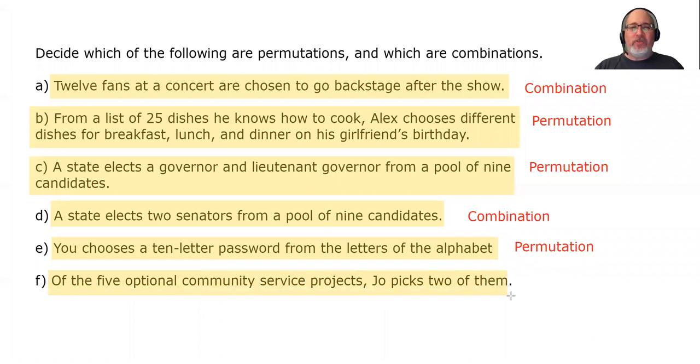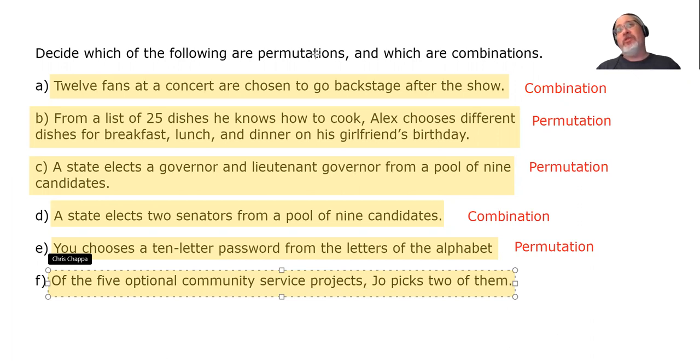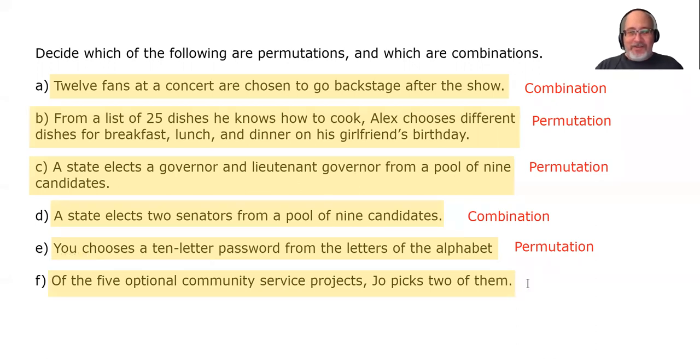Of five optional community service projects, Joe picks two of them. Does it matter what order she picks them in? No. If Joe decides to pick up trash off the street first and then decides to work at a soup kitchen, she's going to do the same work as if she decided, I'm going to work at a soup kitchen and I'll also pick up trash off the street. The order does not matter, which makes this a combination.